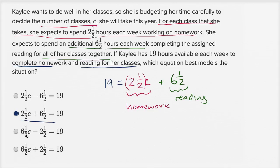These other choices — 6½ times C — this would imply that you're spending 6½ hours per class, so that's not right. And then this other option is also 6½ times C, so that's not going to work out either.